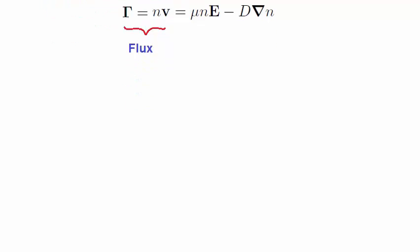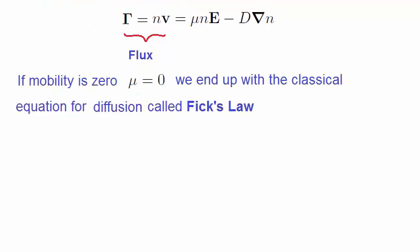If the mobility mu is zero, perhaps the collision frequency is quite high, therefore resulting in very small mobility, we end up with the following expression, which is the classic diffusion law called Fick's law, and relies on the density gradient of a certain species, where d is called the diffusion coefficient.